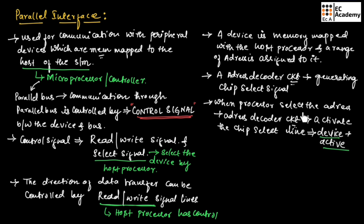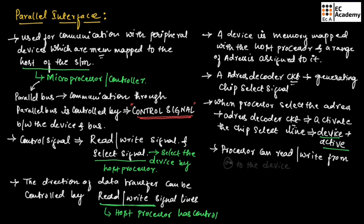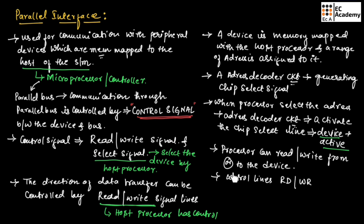When the processor selects an address, the address decoder circuit activates the chip select lines, making the device active. Once the device is active, the processor can read from or write to the device using control lines RD or WR respectively.